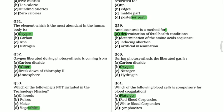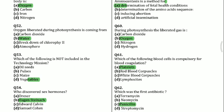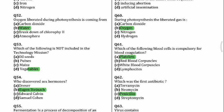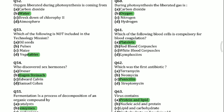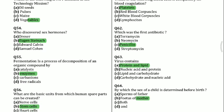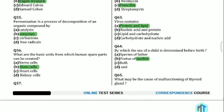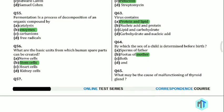Question 60: During photosynthesis the liberated gas is oxygen. Question 61: Which of the following blood cells is compulsory for blood coagulation? Platelets. Question 62: Which was the first antibiotic? Penicillin. Question 63: Virus contains protein and lipid.